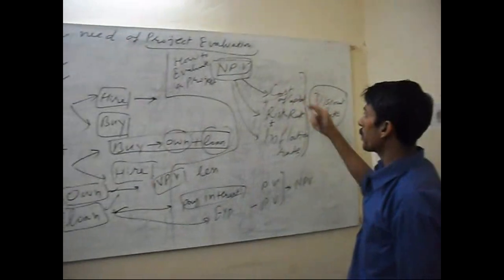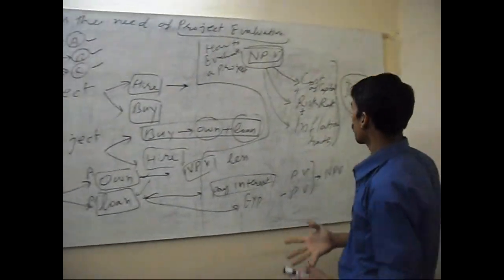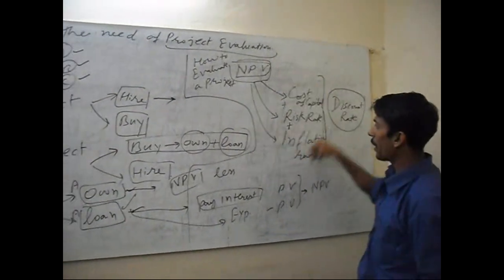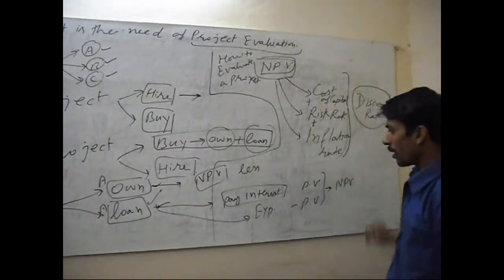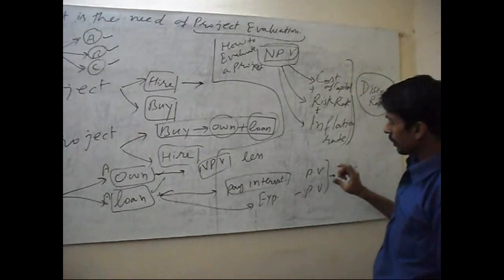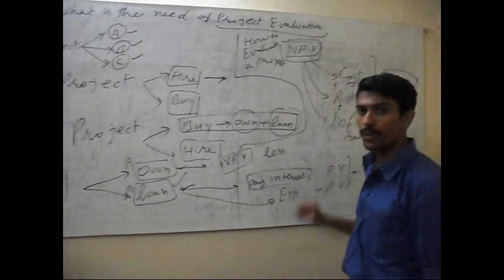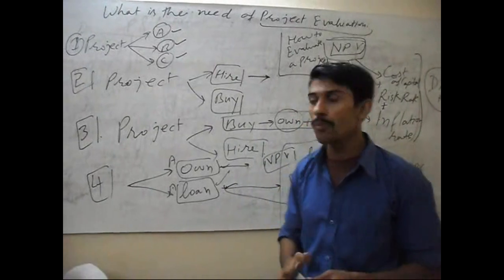Discount rate will be cost of capital plus risk rate. When we add this, we can calculate discount rate. On this basis, we can calculate present value of cash outflow and cash inflow.